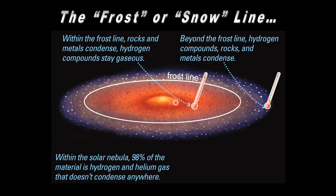Obviously as we get close we're really hot, and as we go further out we cool off. Inside the snow line or frost line it's very hot, and the only things that can exist there are materials that condense out at high temperatures — the metals, rocks, and minerals. The hydrogen compounds are gaseous throughout; they don't precipitate out because it's too warm. Once you cross the frost line, metals and minerals can still exist in solid form, but only beyond the frost line is it cool enough for the volatiles to condense out as well. That's a line of demarcation that will have significant influence on subsequent developments.